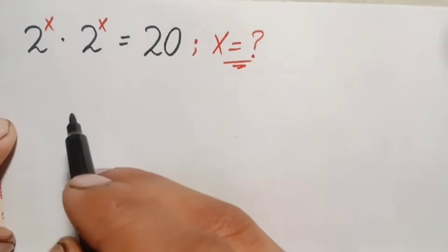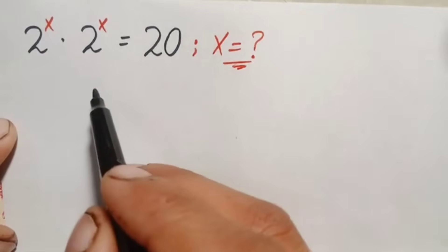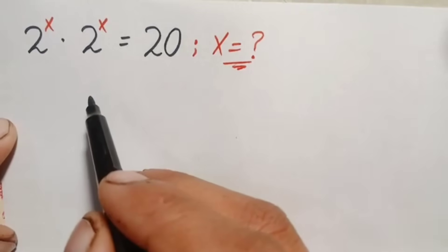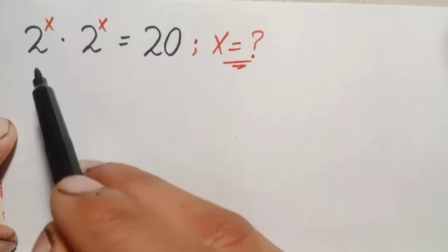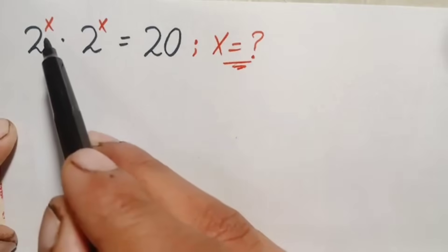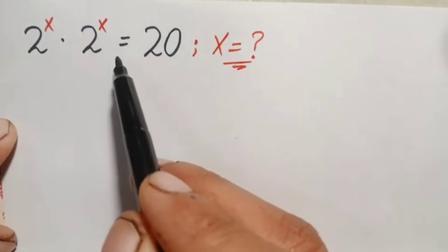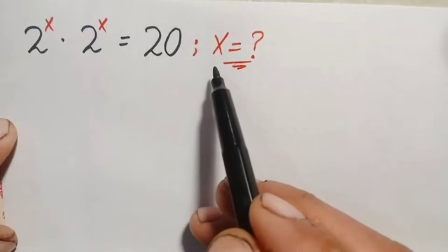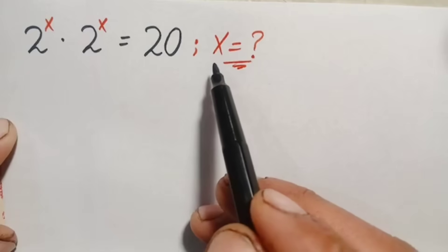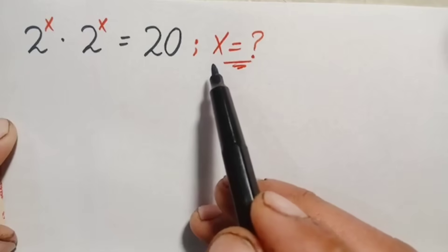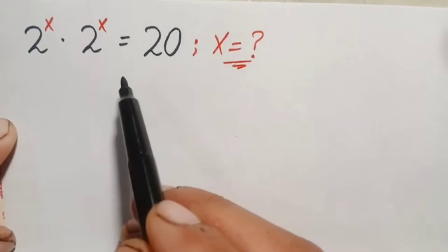Hello everyone, you are welcome. How to solve this beautiful exponential math problem: 2 raised to power x times 2 raised to power x is equal to 20. Here we will try to find out the value of this unknown x.